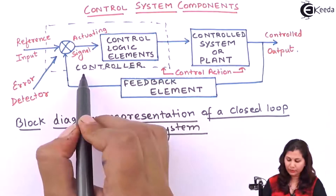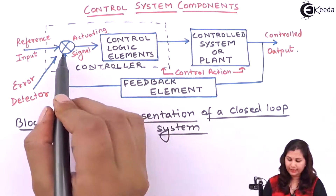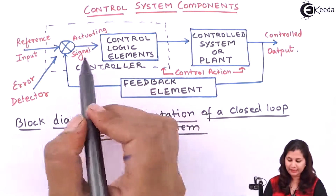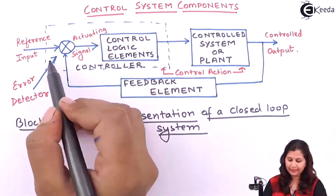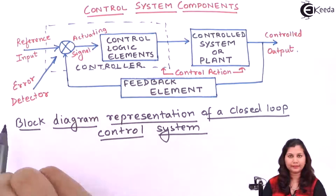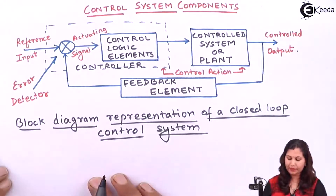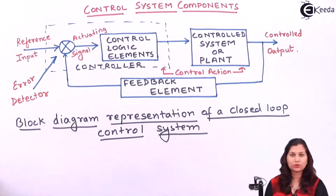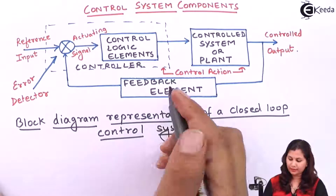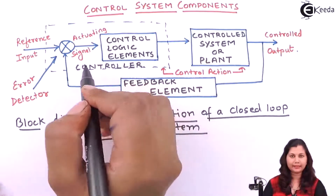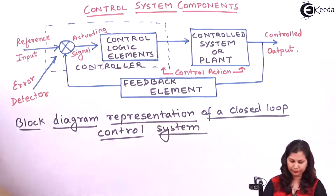This controller is the sum of these control logic elements and this error detector. So the three basic elements of the closed-loop control system are the feedback element, the controlled system, and the controller.